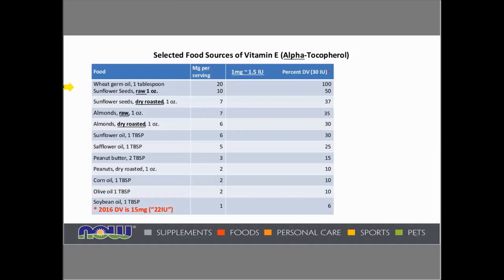Getting back to food sources: wheat germ oil is a great source, as are raw sunflower seeds, which can provide as much as 10 milligrams per serving compared to 7 milligrams when roasted. There's a smaller difference between raw and dry-roasted almonds. Soybean oil only has about one milligram per serving. The daily value is now 15 milligrams, correlating to 22 international units instead of the previous 30 units. So not only is the designation changing, but the quantity the FDA considers to equal the daily value has gone down.